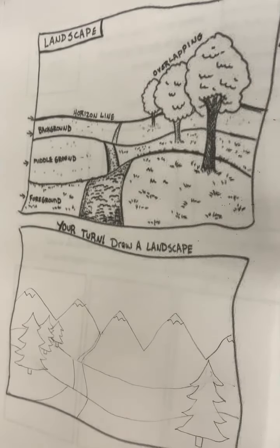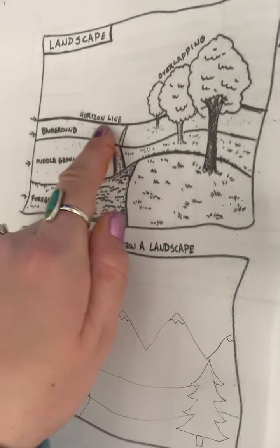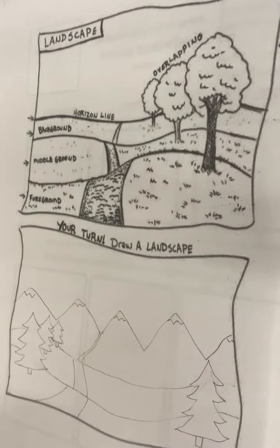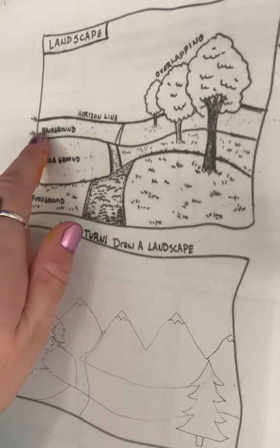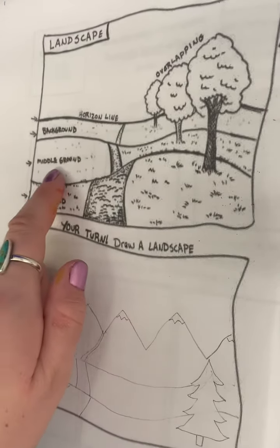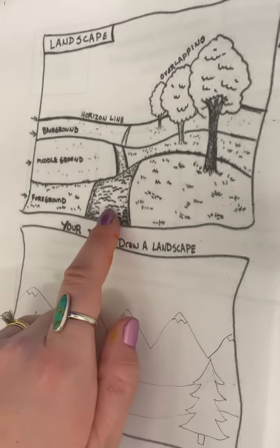Today you're going to make a landscape drawing. If you notice in the landscape, there is a horizon line. This line divides the land from the sky. There is also a background, a middle ground, and a foreground.